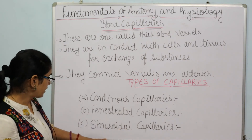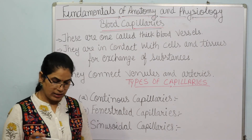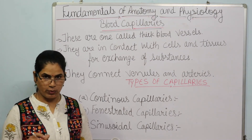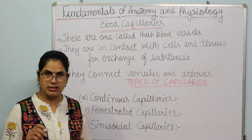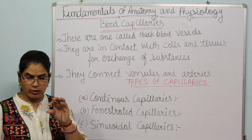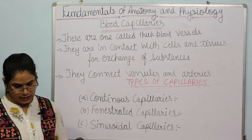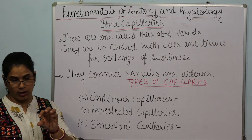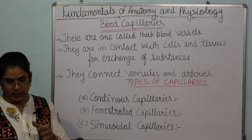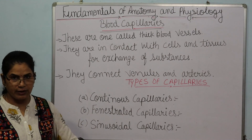The third type is sinusoidal capillaries. These are the last type of capillaries and are found in the liver, spleen, and bone marrow. Bone marrow is found under the arms and is where RBCs are produced. The spleen is an organ also called the blood bank and is known as the filter organ — it is also called the graveyard of RBCs as it destroys old red blood cells.